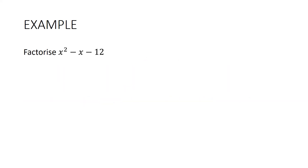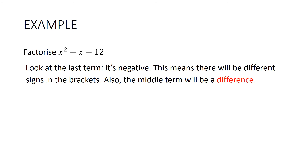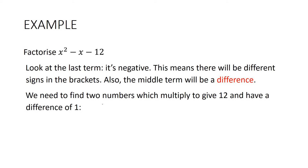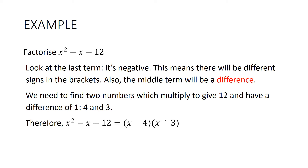What about x² − x − 12? The last term is negative, so there will be different signs in the brackets, and the middle term will be a difference. We need factors of 12 with a difference of 1 — that's 4 and 3. Which way round? We want the result to be negative, so we want the bigger number to be negative: negative 4 and positive 3. So the answer is (x + 3)(x − 4).